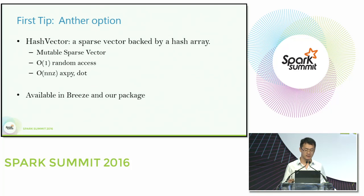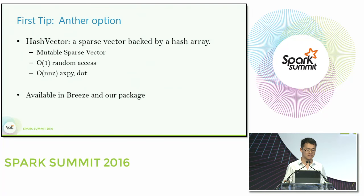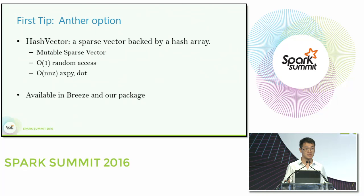There's also a hash vector — another kind of sparse vector backed by a hash array. If you're familiar with Java, imagine it as a key-value pair where the key is the index and the value is the non-zero element. Like a hash map, it provides O(1) random access and updates. Linear operations like AXPY and dot also have better time complexity — exactly the number of non-zero elements in the vector. Currently there are two hash vector implementations: one already in Breeze, and the other in our package.